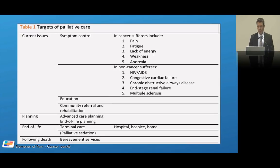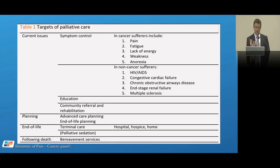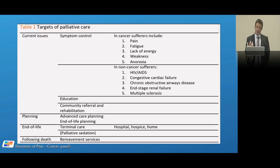The targets of palliative care include current issues, planning, end-of-life care, and issues following the death of a patient. Current issues include symptom control, education, community referral, and rehabilitation. Symptom control covers both cancer and non-cancer sufferers — HIV/AIDS, cardiac failure, lung failure, renal failure, and multiple sclerosis. Pain is a big symptom requiring control, but other major symptoms include fatigue, lack of energy, weakness, anorexia, and cachexia — the big problems for people living with cancer.